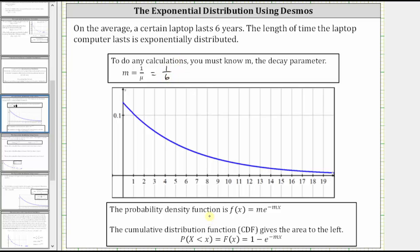The probability density function is f(x) = m times e raised to the power of negative mx, which in our case gives us f(x) = (1/6) times e raised to the power of negative (1/6)x. The cumulative distribution function gives the area to the left under the probability density function, and it is given by F(x) = 1 minus e raised to the power of negative mx, which in our case is 1 minus e raised to the power of negative (1/6)x.